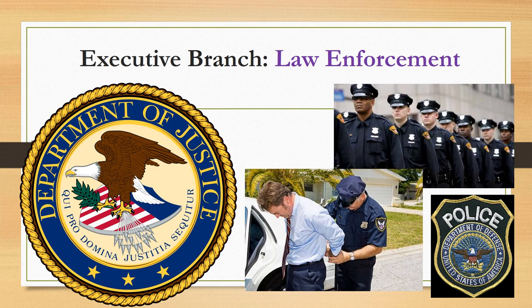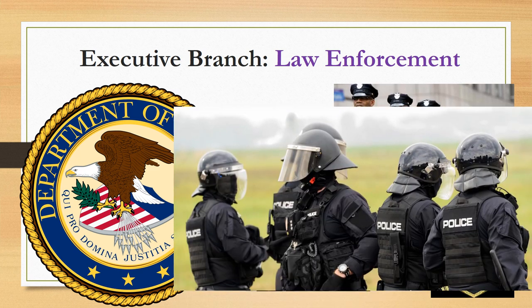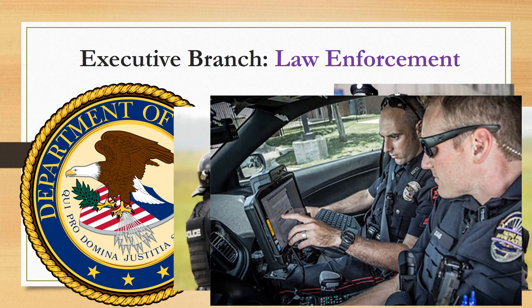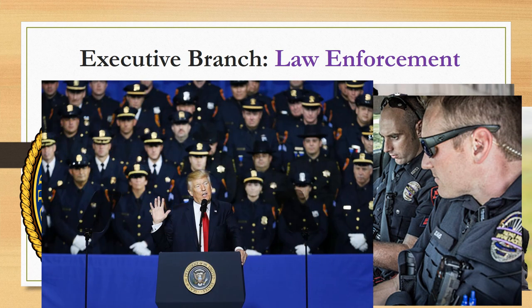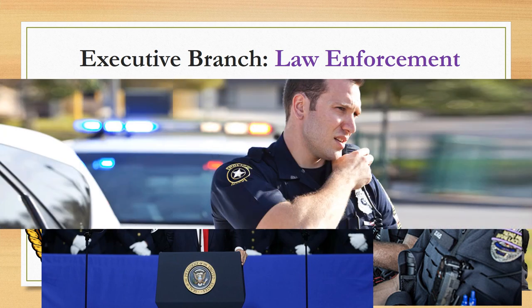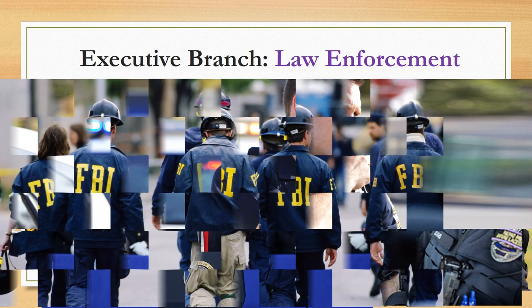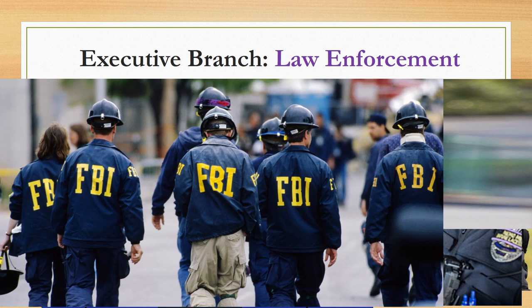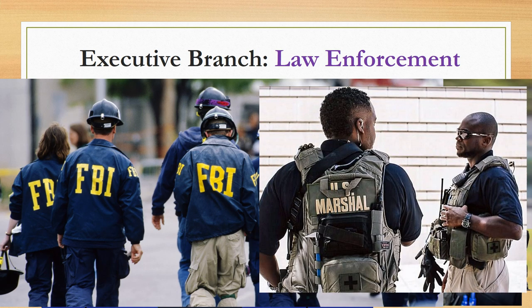The final agency we are going to talk about today is the Department of Justice. Its job is to enforce the law and to protect public safety. That means that law enforcement, like police officers, are under the executive branch too. The Department of Justice makes sure that criminals are prosecuted and that all Americans get fair justice. Some of the organizations included in this department are the Federal Bureau of Investigation (FBI) and the U.S. Marshals.